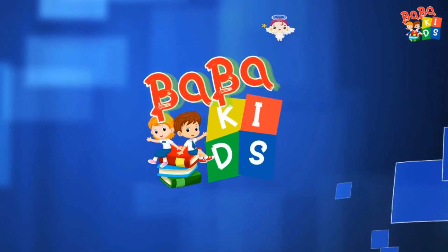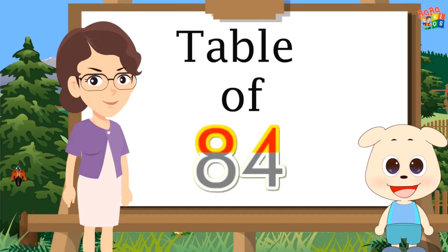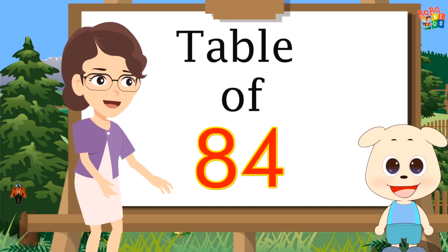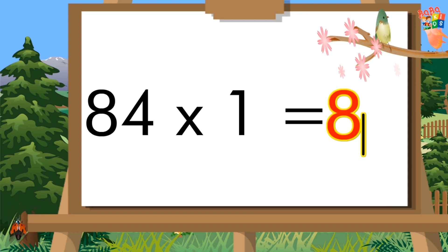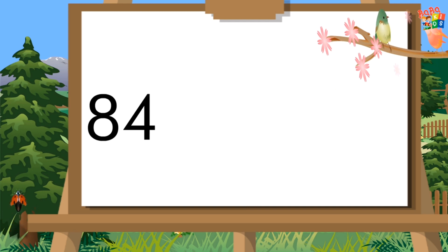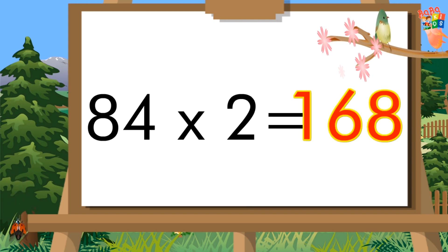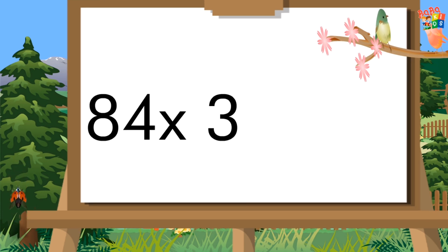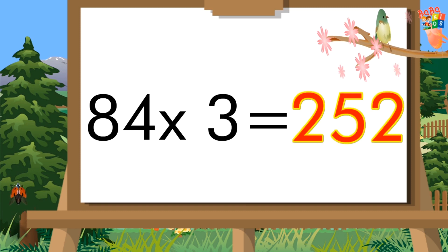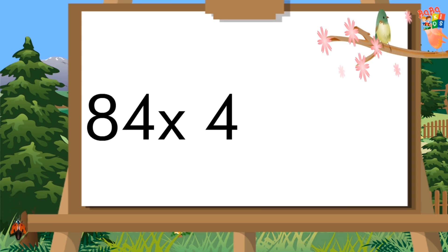Baba Kids Table of 84. 84 ones are 84. 84 twos are 168. 84 threes are 252.